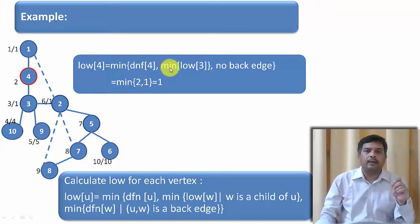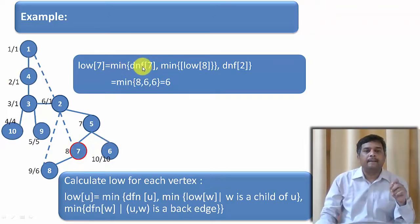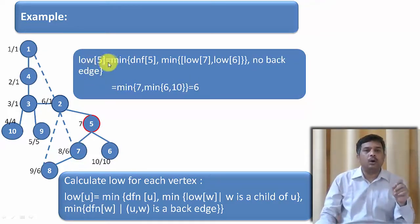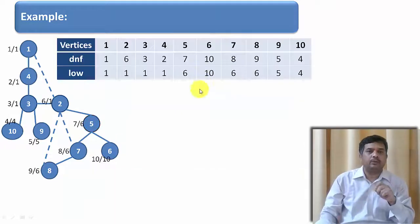Now finding low of 4: low of 4 is minimum of dfn of 4, minimum of its child, and its back edge's dfn. dfn of 4 is 2 and low of its child is 1. So minimum of 2 and 1 is 1, so we write 2 slash 1. Now taking vertex 7: dfn of 7, minimum of its child — its child is vertex 8 — and dfn of back edge 2. So minimum of 8, 6, and 6, this value becomes 6. Now take vertex 5: low of vertex 5 is minimum of dfn of 5 and minimum of low of its children and dfn of its back edge. There are 2 children of 5, vertices 7 and 6. So minimum of low of 7 which is 6, and low of 6 which is 10, so it becomes 6. So we are writing 7 slash 6.